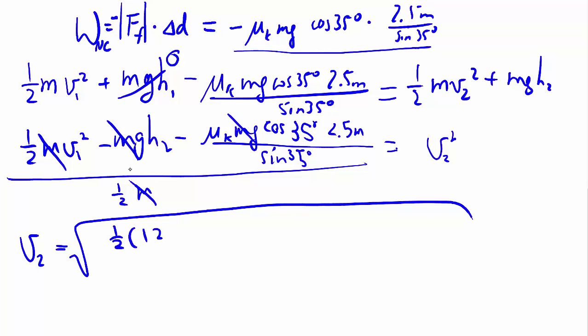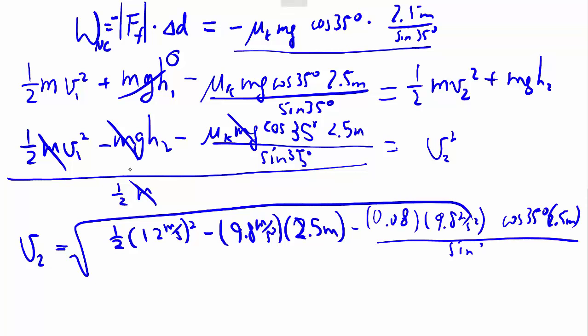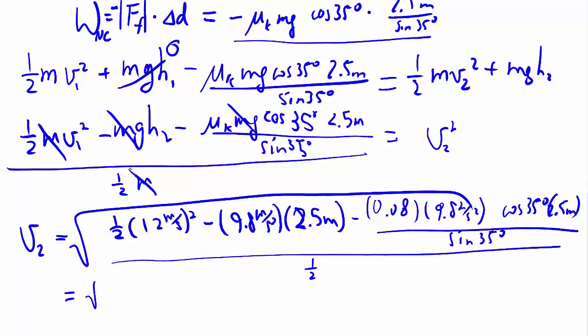That's a little bit of a mess, so we have 12 m per second, all squared, minus 9.8, so on and so forth. H2 is 2.5 m. All over... Which equals the square root of 89.402 m squared per second squared.